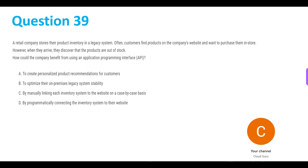Let's read the options. Option A: to create personalized product recommendations for customers. B: to optimize their on-premises legacy system stability. C: by manually linking each inventory system to the website on a case-by-case basis. And D: by programmatically connecting the inventory system to their website.